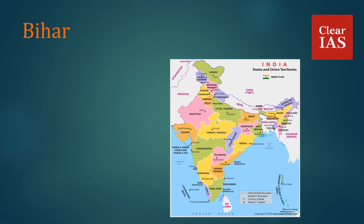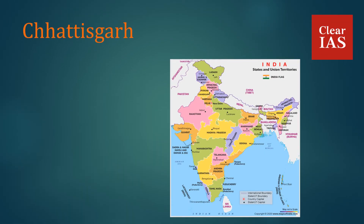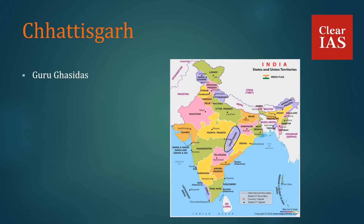In Bihar, we have Valmiki National Park. In Chhattisgarh, we have Guru Ghasidas National Park, Indravati, and Kanger Valley National Park.